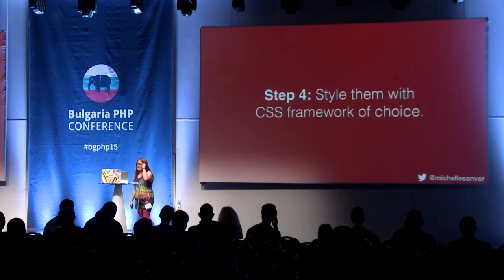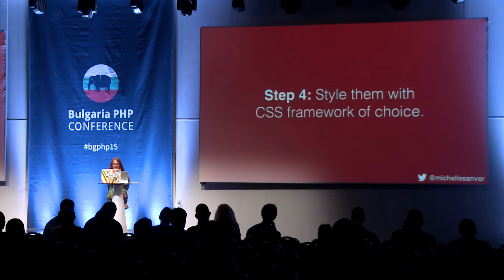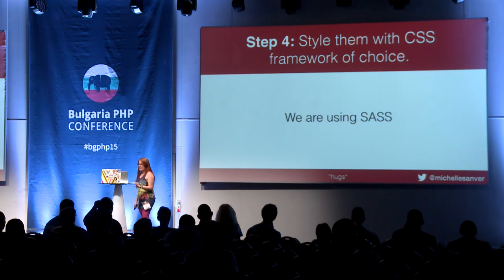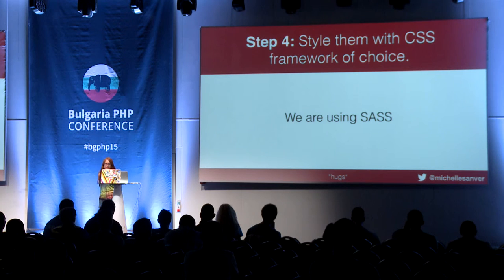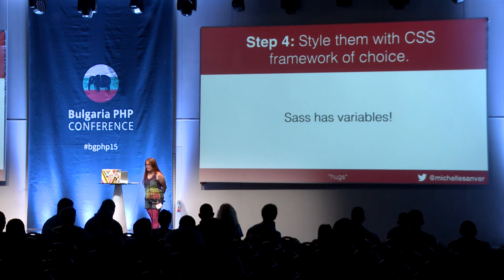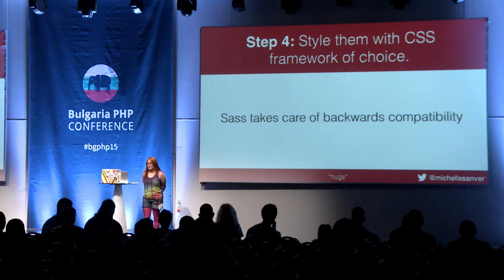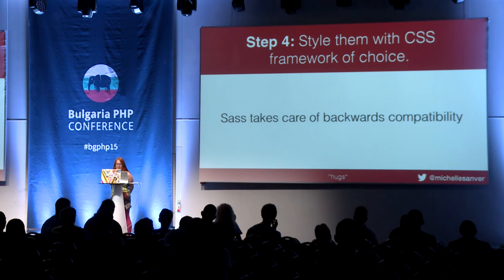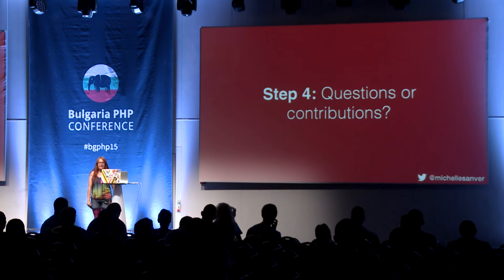Now we can start styling — that's something I don't do anymore and I'm really happy about it. We are using SASS, which makes everything a lot easier. But it means we need to preprocess our CSS. SASS has variables that need to be compiled into the CSS files. SASS also has a lot of neat things for backwards compatibility, especially if you use it together with Compass.